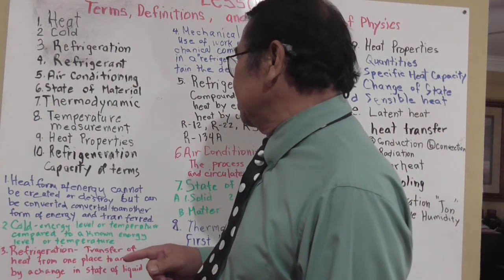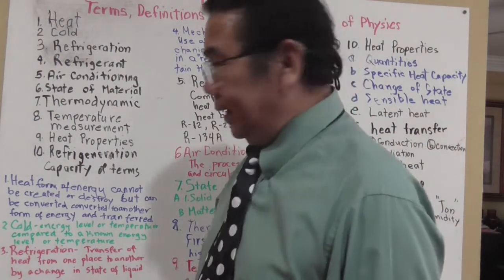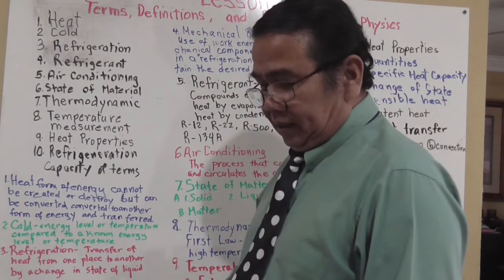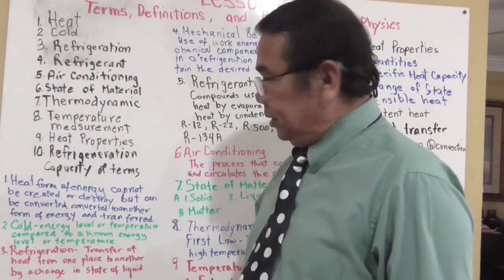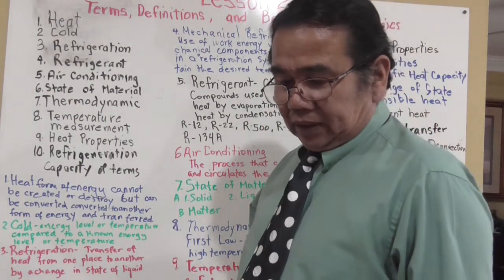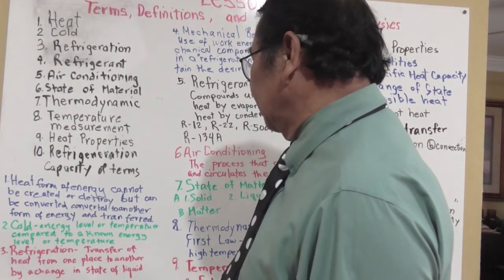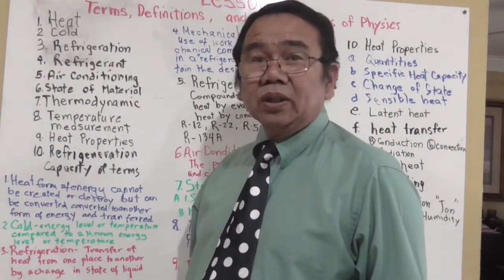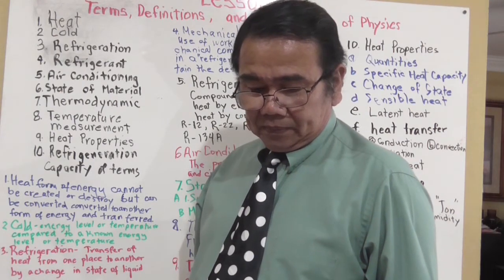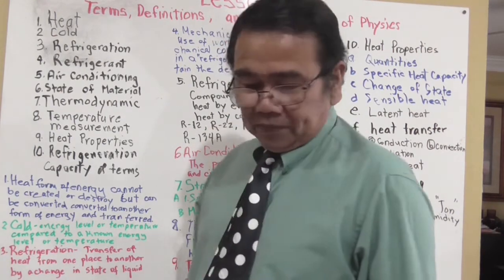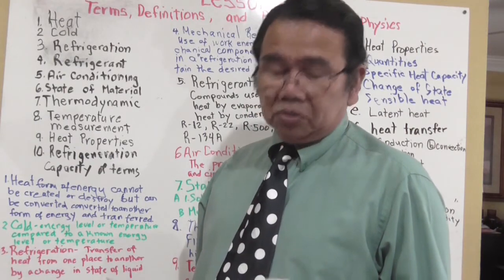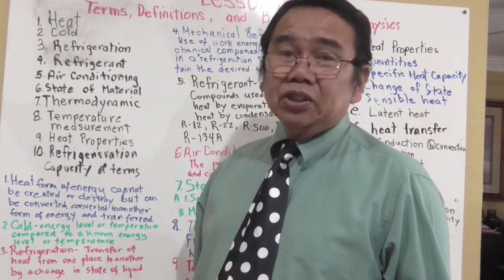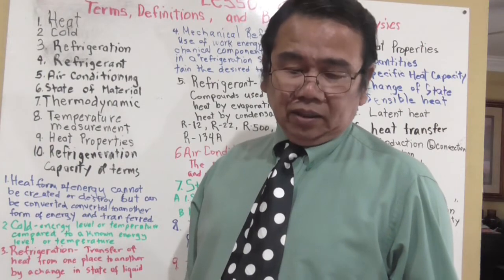The first term we'll define is heat. Heat is a form of energy that cannot be created or destroyed, but can be converted into other forms of energy or transferred. Heat energy can only be caused to travel by the creation of a difference in energy level, which is called heat intensity or temperature.